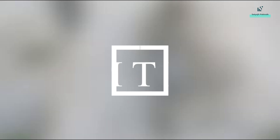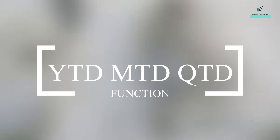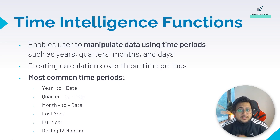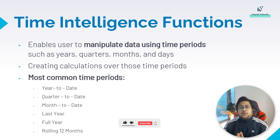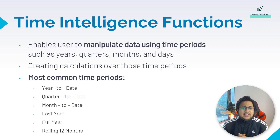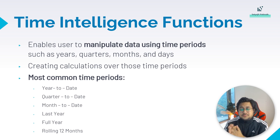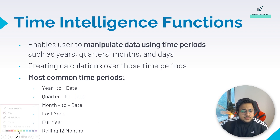Number one and the most important function: time intelligence functions. Here we will be covering YTD functions, MTD functions, and QTD functions. Time intelligence functions are by far the most important DAX functions in Power BI and one of the most commonly asked questions in data analyst and Power BI interviews. They enable users to manipulate data using time periods such as years, quarters, months, and days — creating calculations over those time periods. The most common are year to date, quarter to date, month to date, last year, and full year.